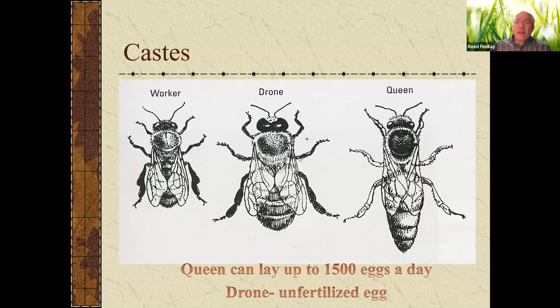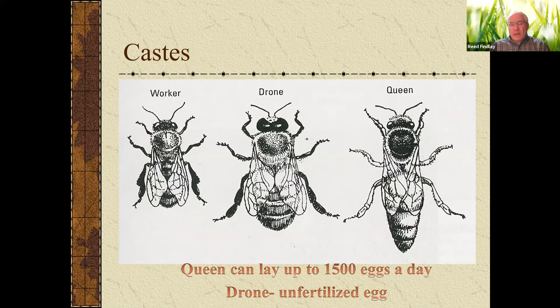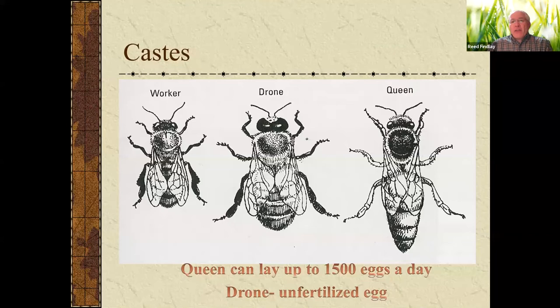Royal jelly is produced by young female workers from a mandibular gland. This royal jelly is very nutritious, and it causes genetic changes in the female larva — the younger the female larva is, the more changes will be apparent. If the colony wants to produce a new queen, they'll feed five or six female larvae royal jelly. The one that hatches out first will immediately go and sting and kill the other potential queens, and her mother will then fly away with about half of the hive as a swarm to find a new home.